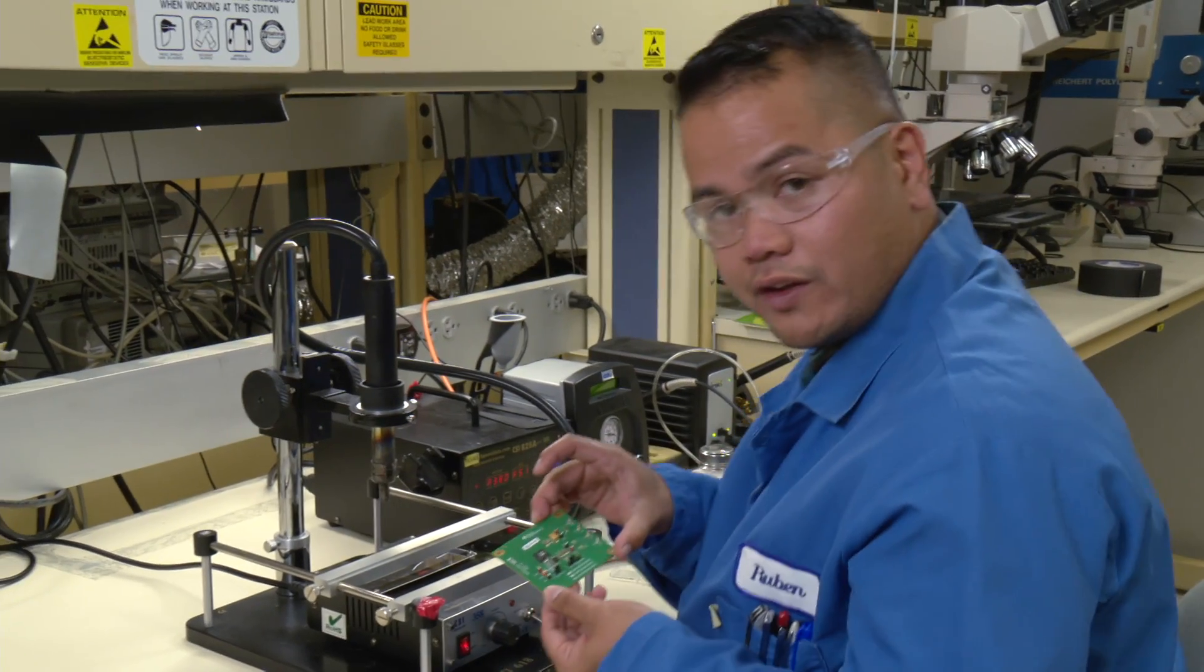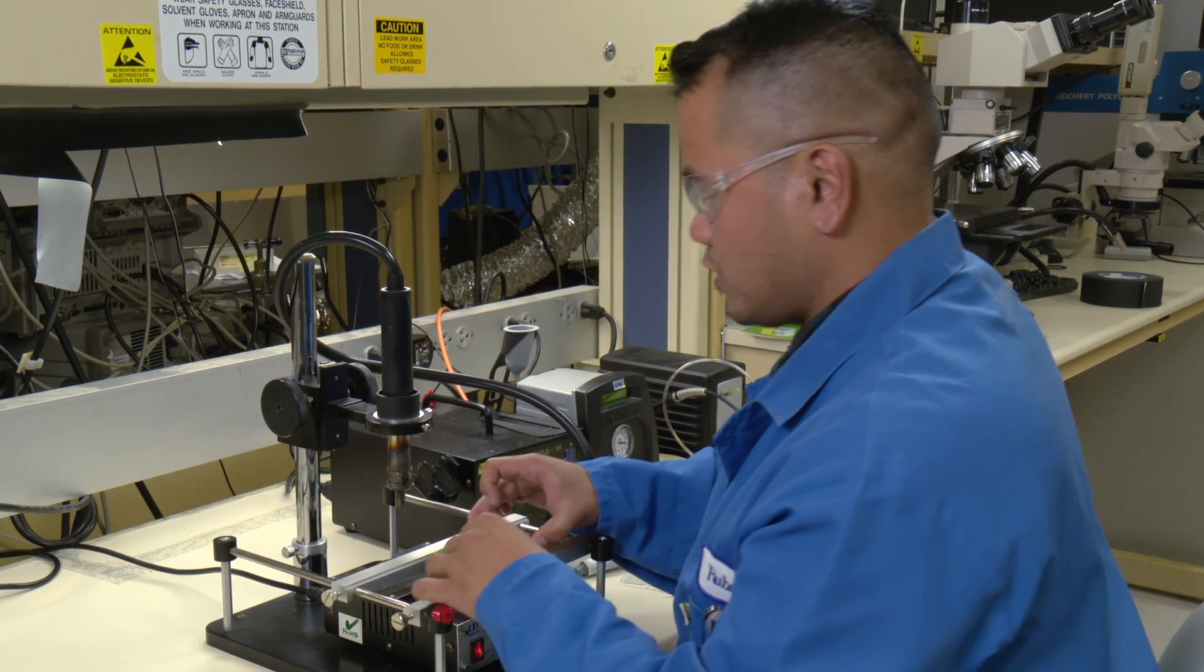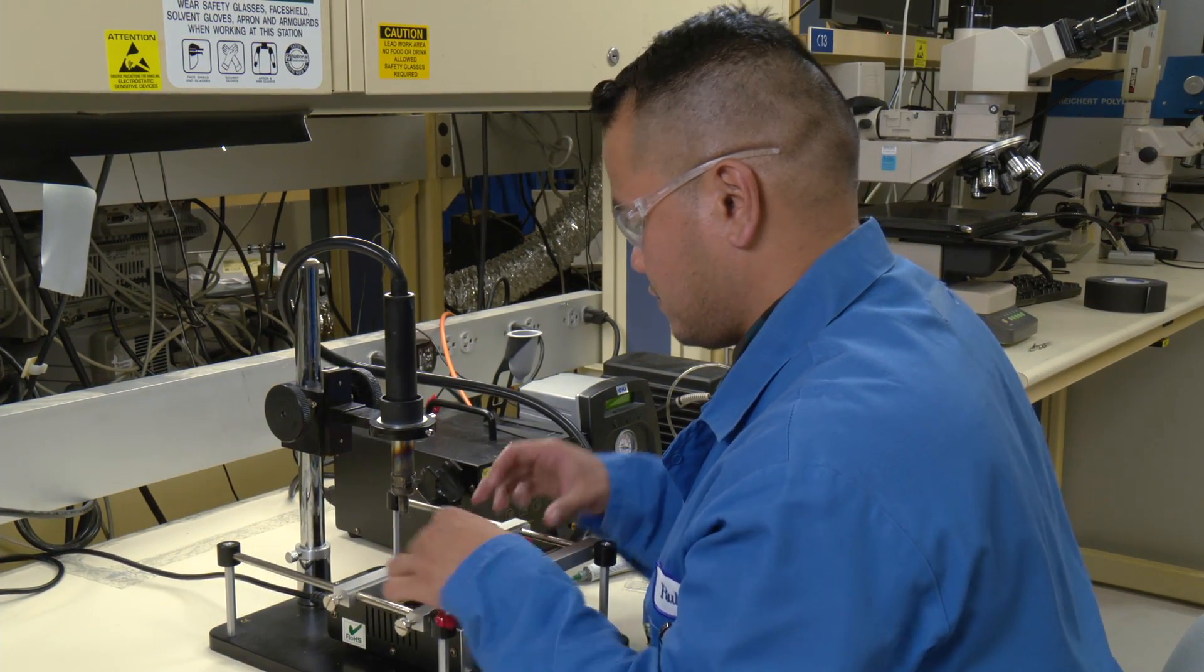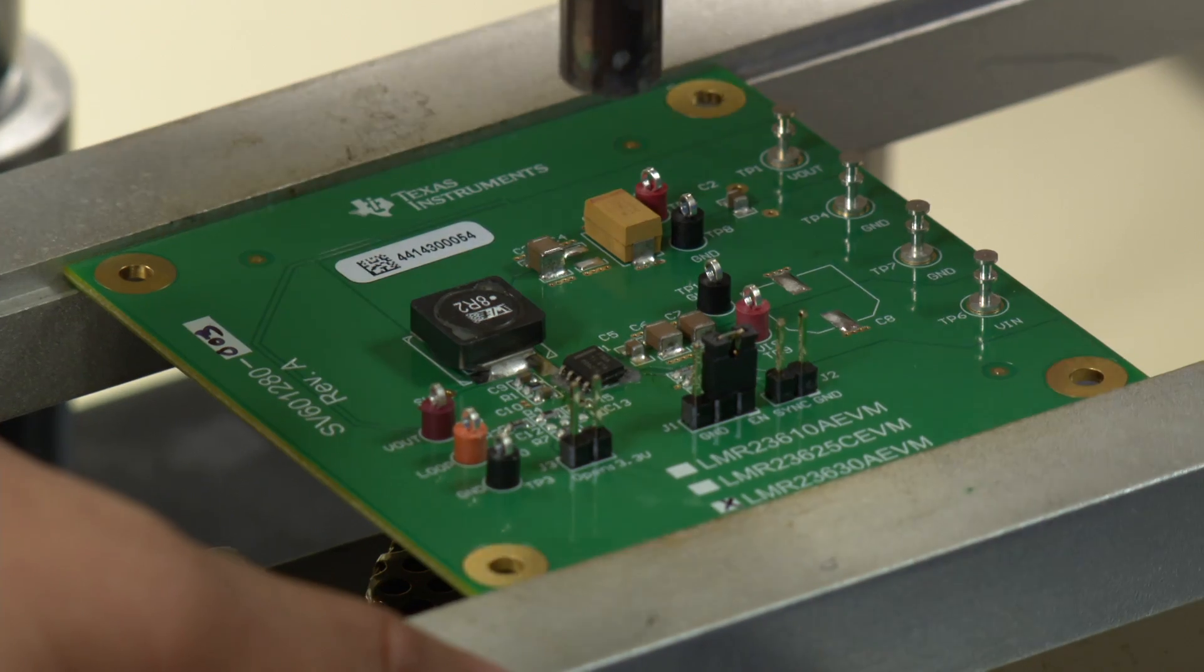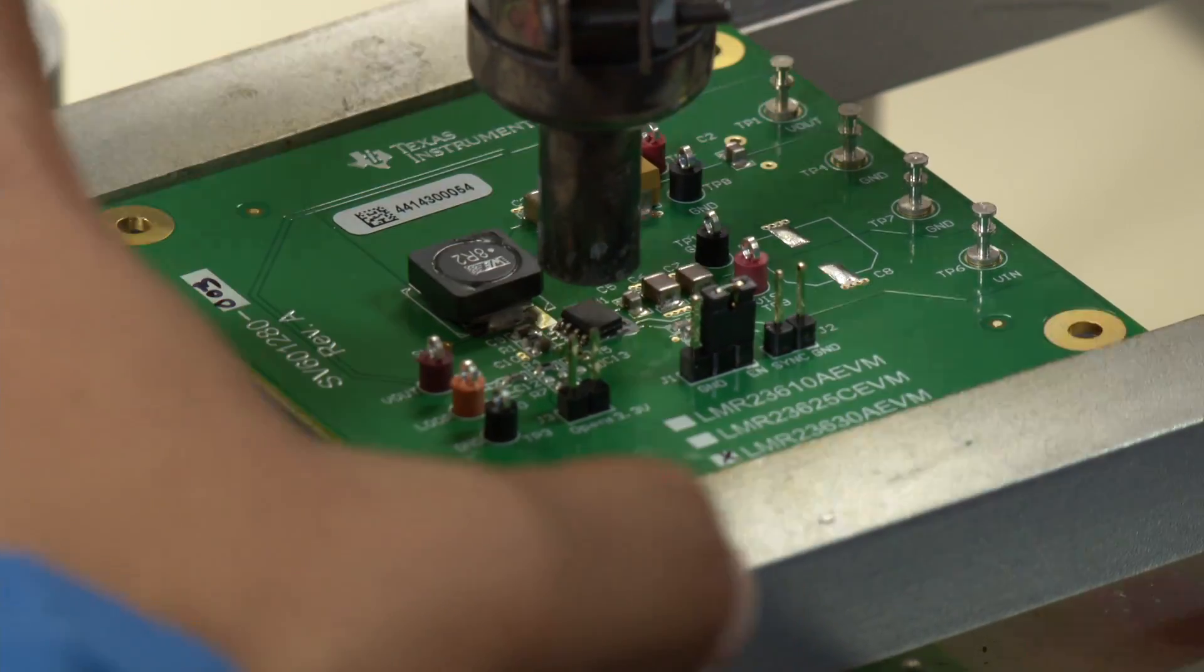So now that I have the part on there, I'm going to put it back on the hot air reflow station so that I can solder it. Just like before, I put it as close to the part as I can.